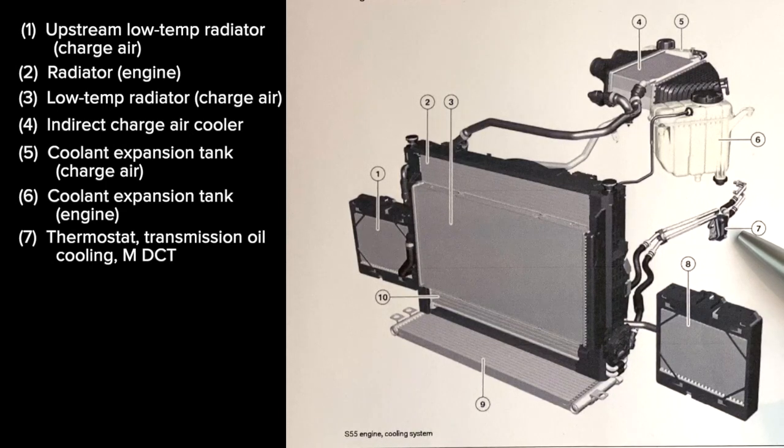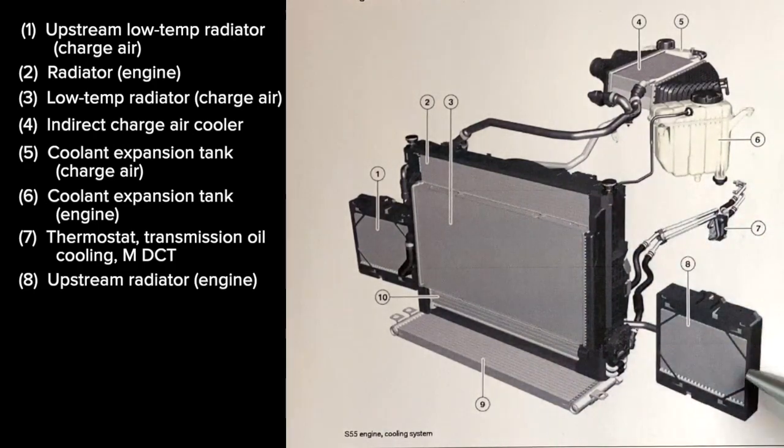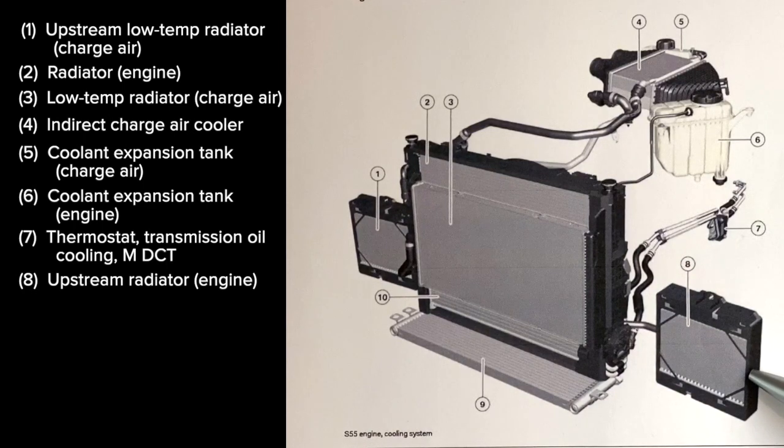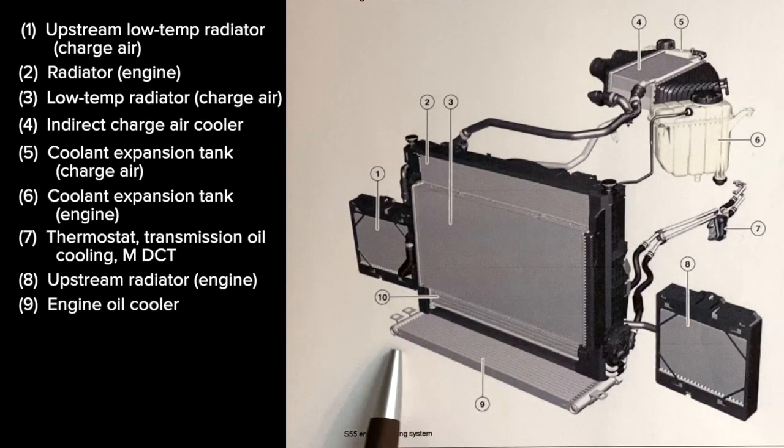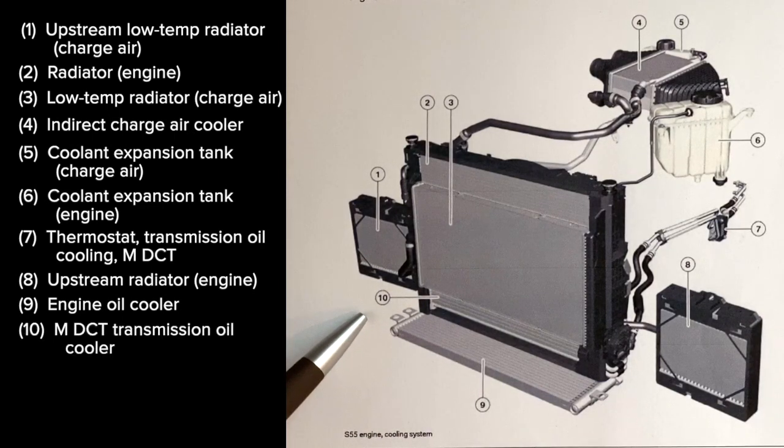Number seven is the thermostat for the transmission oil cooling for the M DCT. Number eight is the upstream radiator, which in conjunction with the large radiator cools the engine. Number nine on the bottom is the engine oil cooler. It's actually not a part of either the engine or charge air cooling systems, it's just a straight up radiator to cool the engine oil. And finally, number ten is the M DCT transmission oil cooler.